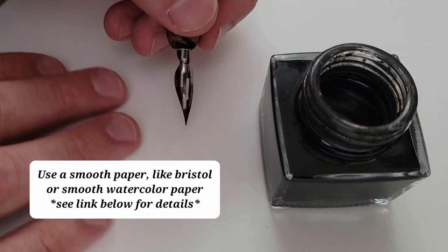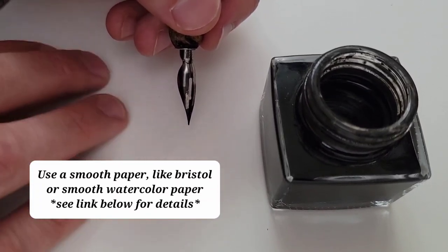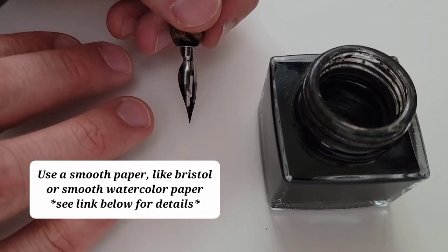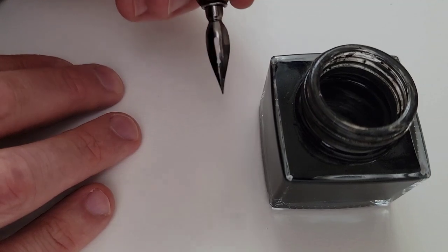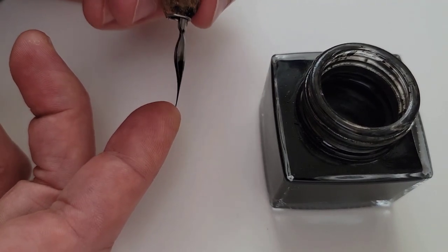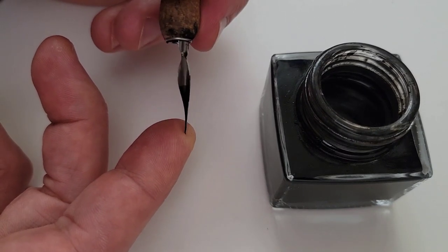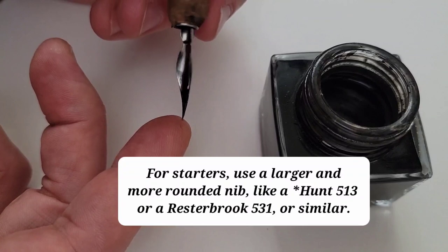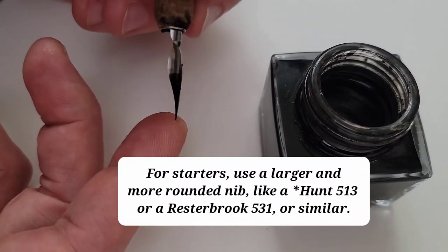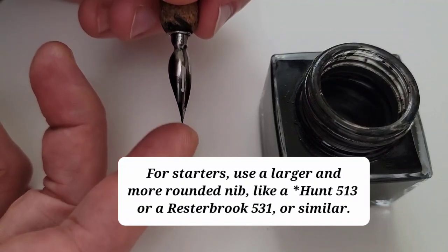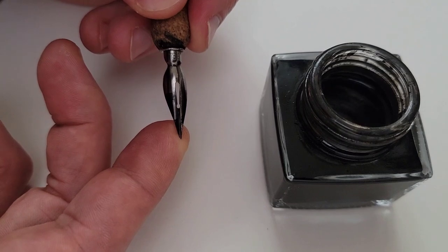So for beginners, I recommend using, number one, a fairly smooth paper like a hot press watercolor paper or a Bristol paper to eliminate snags. I also recommend using a more rigid, slightly rounded nib like this one, which is a Hunt 531. There are several bull type nibs like this that might be better for beginners. They're a little bit less likely to snag, and they're a little more durable, and will hold up to some abuse.